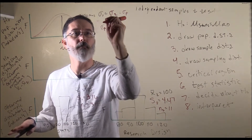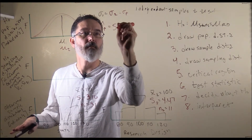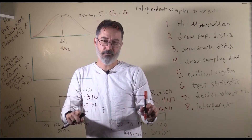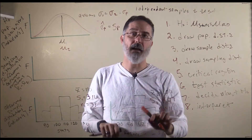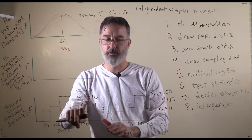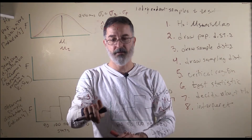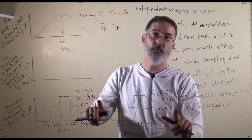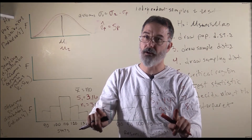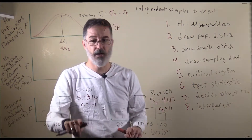We do not actually know the pooled standard deviation, so we are going to have to estimate it by pooling our two sample standard deviations. When the sample sizes were the same, it was really easy — you just took the average. But now the logic is that a sample with a larger sample size is going to have a more accurate estimate of the population standard deviation than a sample with a smaller sample size. So we are going to weigh these estimates by their sample size, or really by their degrees of freedom.